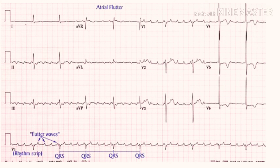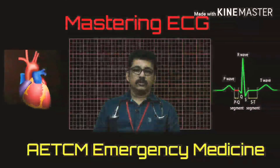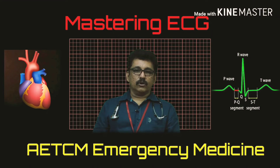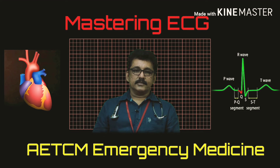Impulses traveling in a circular course inside the atria produce atrial flutter. In this ECG, you can see four P-waves then one QRS complex, again four P-waves then one QRS complex — this sawtooth pattern is classically seen in atrial flutter.